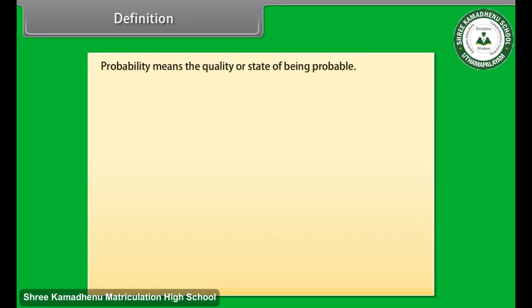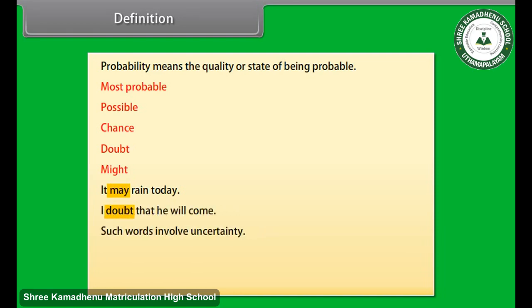Definition. Probability means the quality or state of being probable. In case of probability, we use words like most probable, possible, chance, doubt, might, etc. For example, it may rain today. The word 'may' in the sentence shows probability. I doubt that he will come. Such words involve uncertainty.